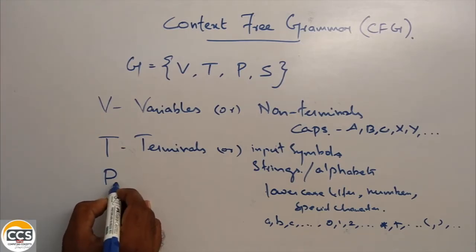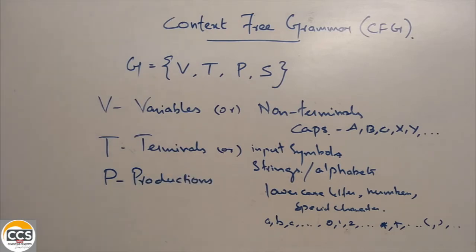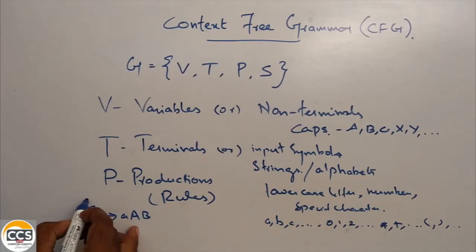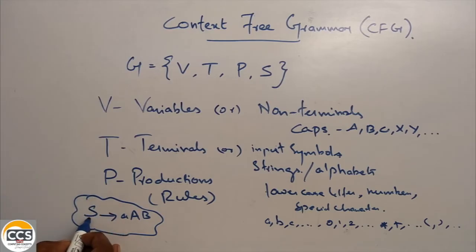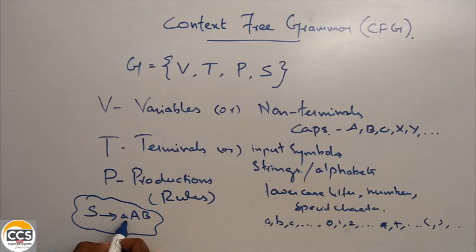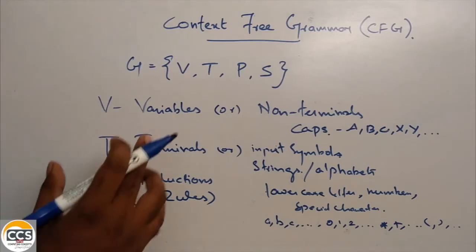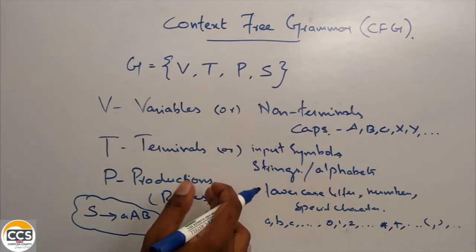Next is P. P stands for productions. Productions are the main rules of our grammar. For example, S tends to a, A, B. This is a production — a sample production. S is a non-terminal that turns to small 'a' (terminal), capital A, capital B (non-terminals). So productions can be written in that form. If you want to write a grammar, you can write a lot of productions — a set of rules.